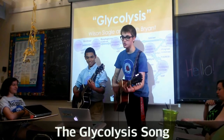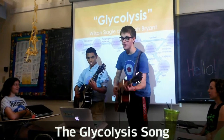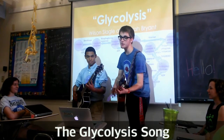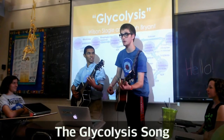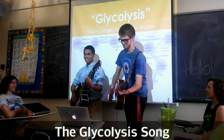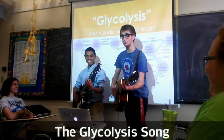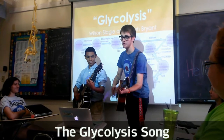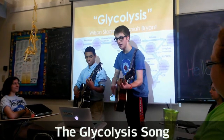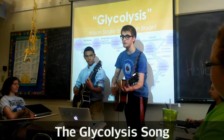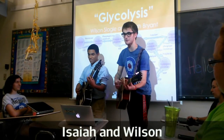It starts out all sugary, G-L-U-C-O-S-E, then comes in 1 ATP, then you have your glucose-6-phosphate. Glucose and fructose are isomers, an enzyme changes him to her. The structure changes a little bit, and on and on you get fructose-6-phosphate.